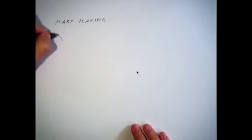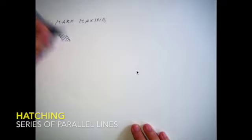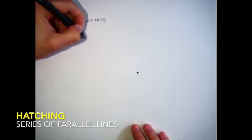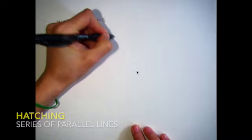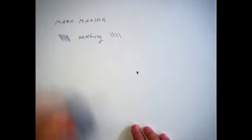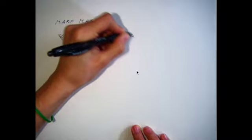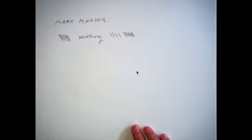I know in the past we've talked about hatching as a way to create value. The less dense your lines are, the lighter the value, and the more dense your lines are, the darker the value.